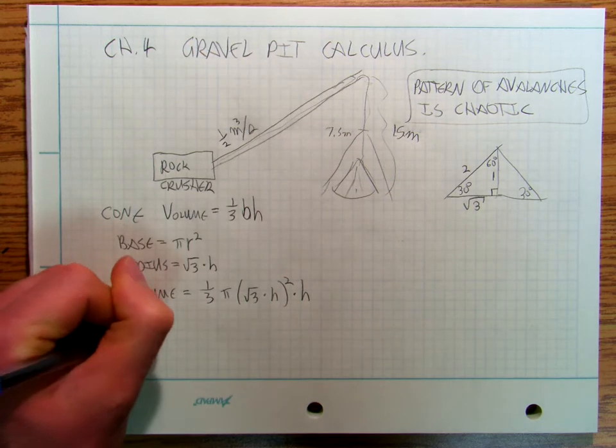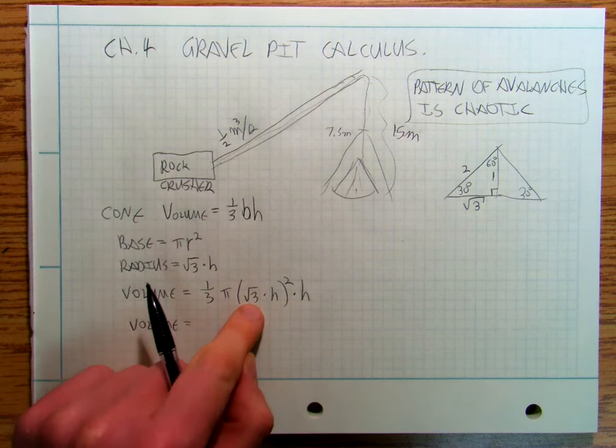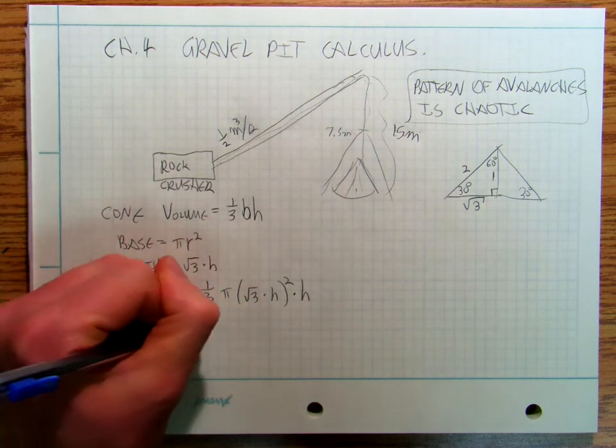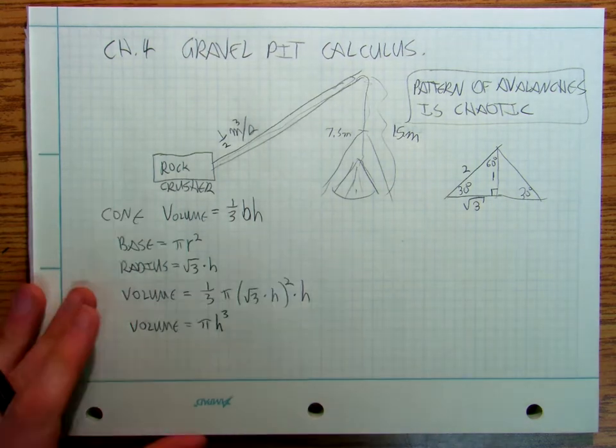So putting those all together, that means that my volume is going to be one-third times my base, which is pi root 3 times h squared times my height. So my volume is going to be 3 times one-third, kind of works out nice, pi h cubed. So my volume is pi h cubed.